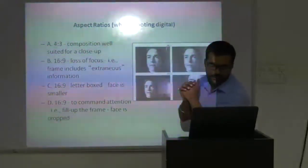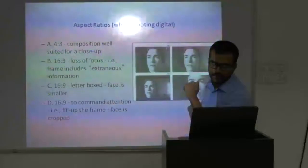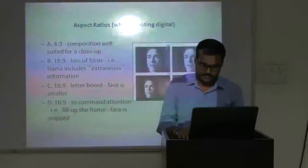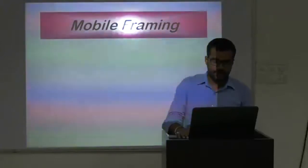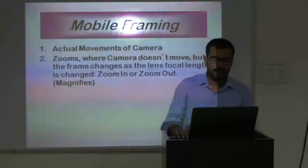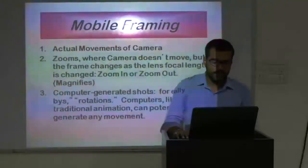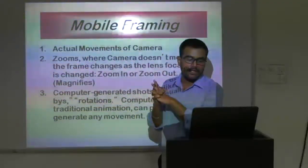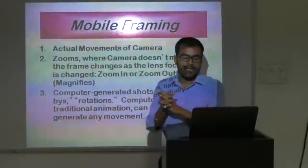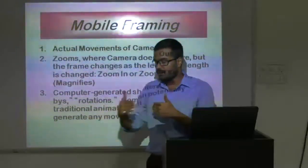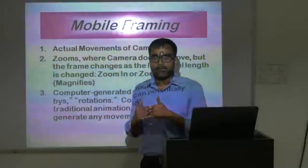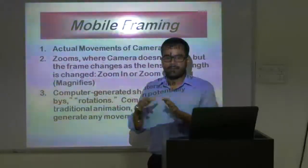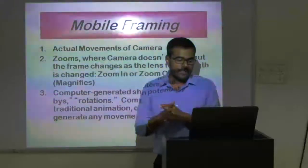And then we have 16 to 9 letterbox, where the face has that rule of thirds. Then we have mobile framing — actual movement of the camera — or zooms, where the camera doesn't have movement but we zoom in from the background, which is used to establish a few shots.